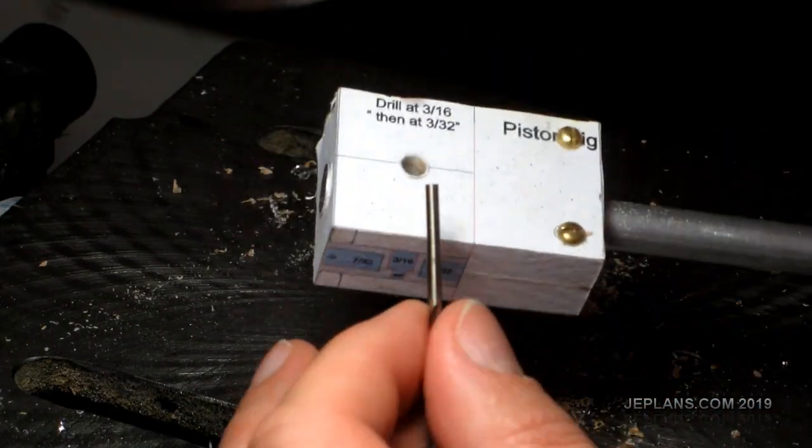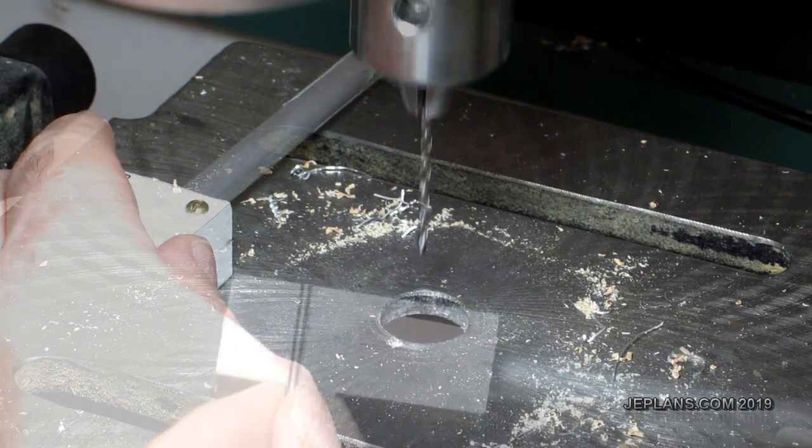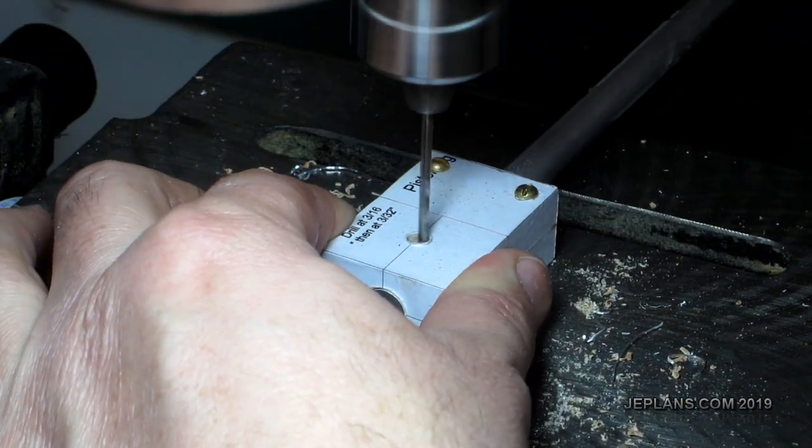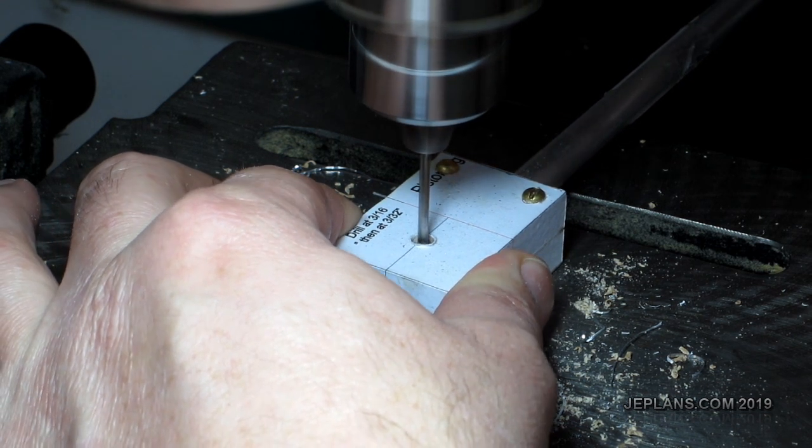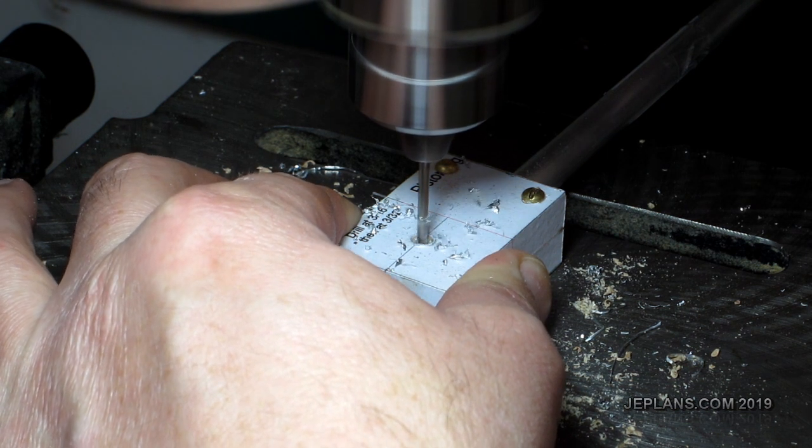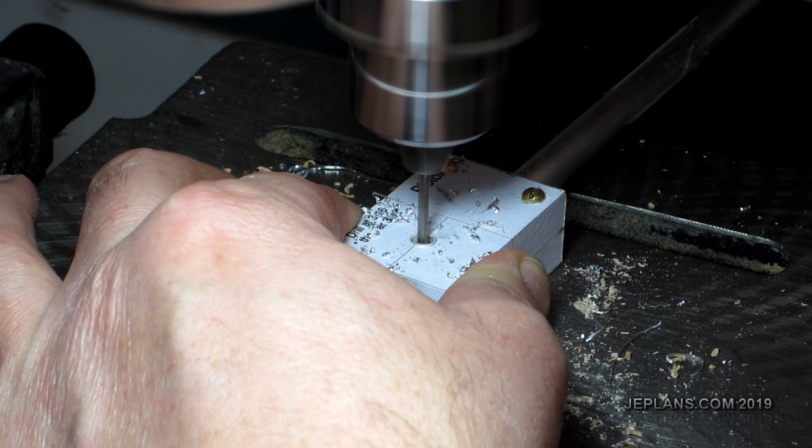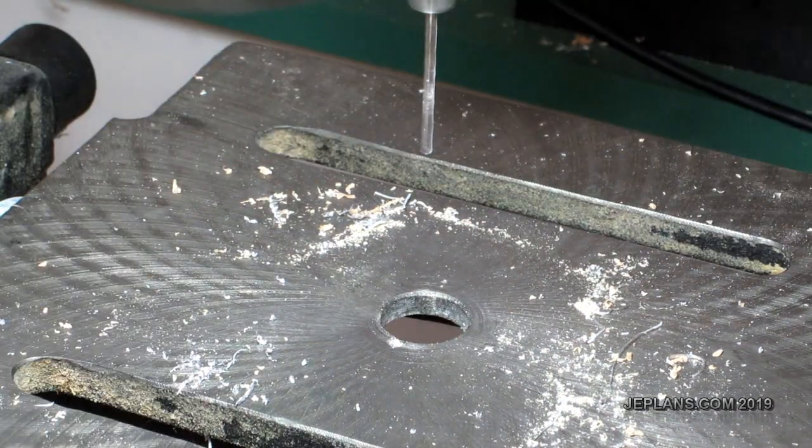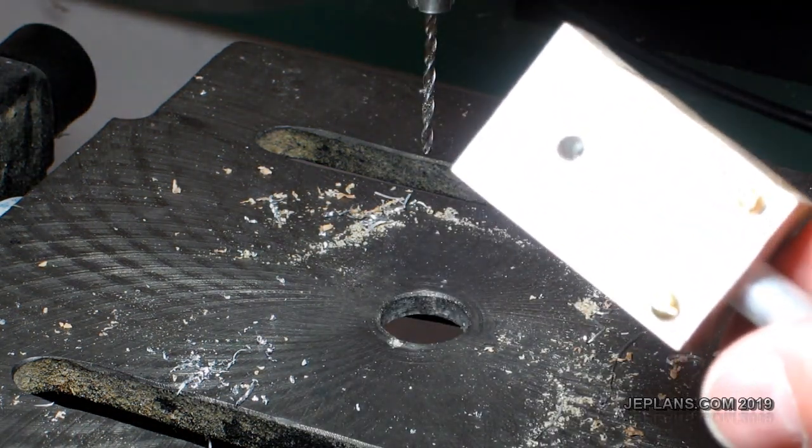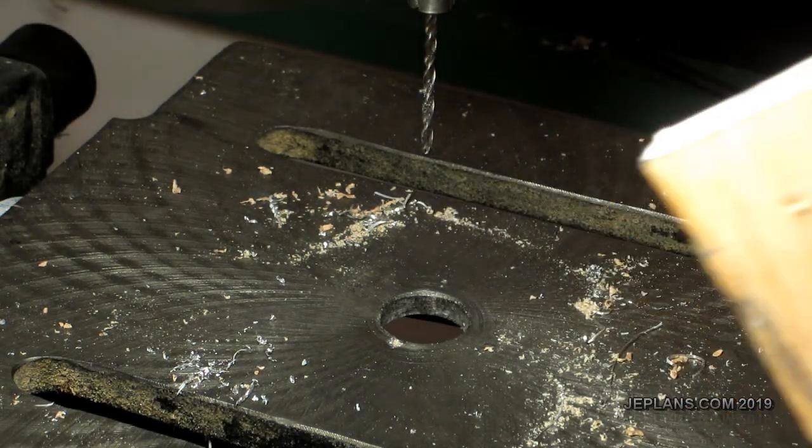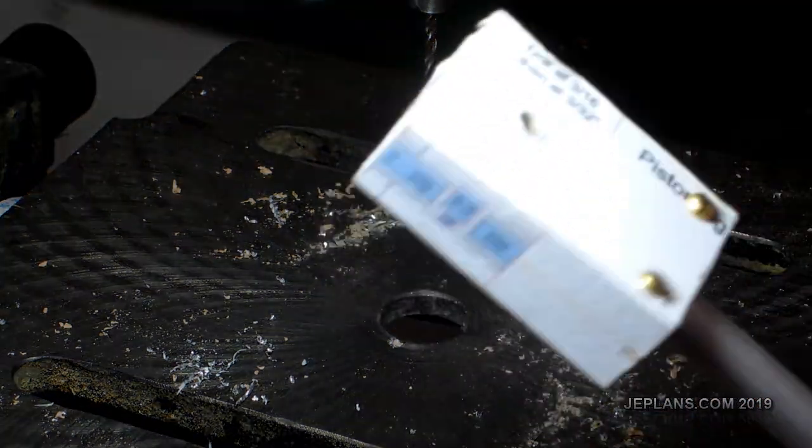Now we'll get the other drill bit. So next one is 3/32nds, like so. And we'll roll. I can't really see it on here, well maybe you can. But the first hole is the pilot for the second hole, so it's centered automatically.